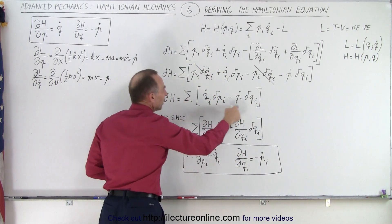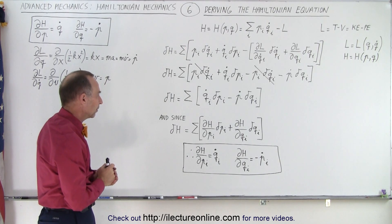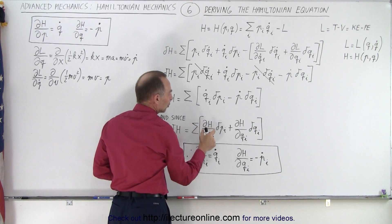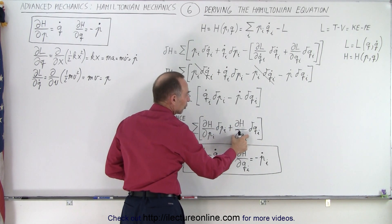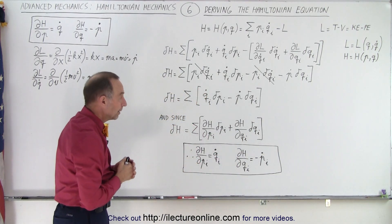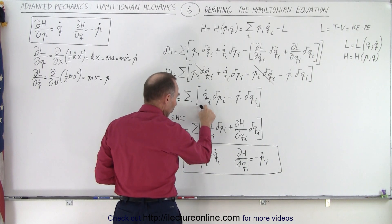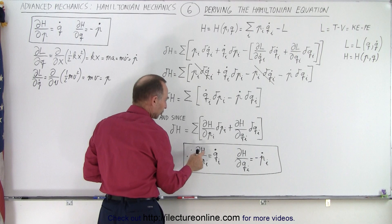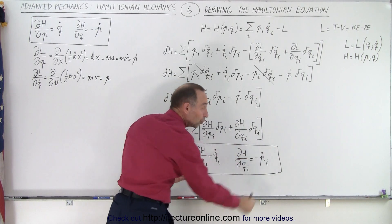This sum over all dimensions equals the differential of the Hamiltonian — an infinitesimal change in the Hamiltonian. In general, the change in the Hamiltonian is the partial derivative with respect to p times delta-p, plus the partial derivative with respect to q times delta-q. Equating these two expressions, we find that the partial derivative of the Hamiltonian with respect to momentum equals q-dot, and the partial derivative of the Hamiltonian with respect to q must be negative p-dot. That is where those two equations come from.